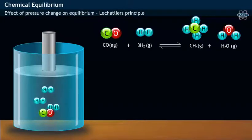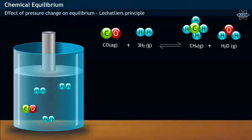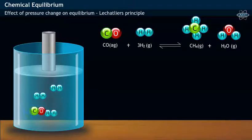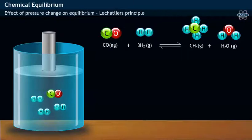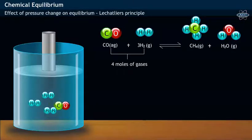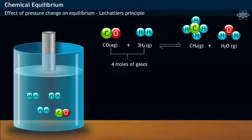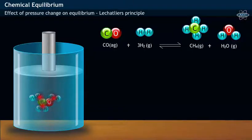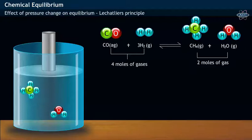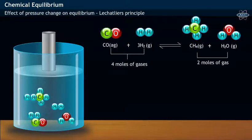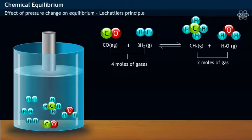Let us consider the formation of methane from carbon monoxide and hydrogen, or catalytic methanation, in a closed container fitted with a piston. In this chemical reaction, 4 moles of gaseous reactants—1 mole of carbon monoxide and 3 moles of hydrogen—forms 2 moles of gaseous products: 1 mole of methane and 1 mole of water.